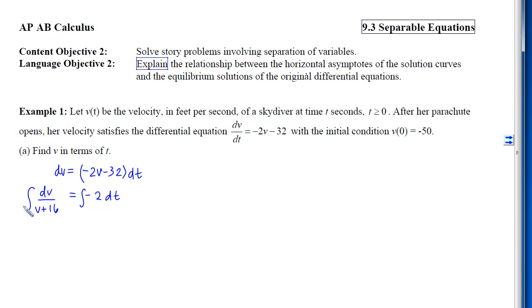What did I take the derivative of with respect to v that gave me 1/(v+16)? That's the natural log of the absolute value of v+16. On the other side, what did I take the derivative of with respect to t that gave me -2? That's -2t plus a random constant.